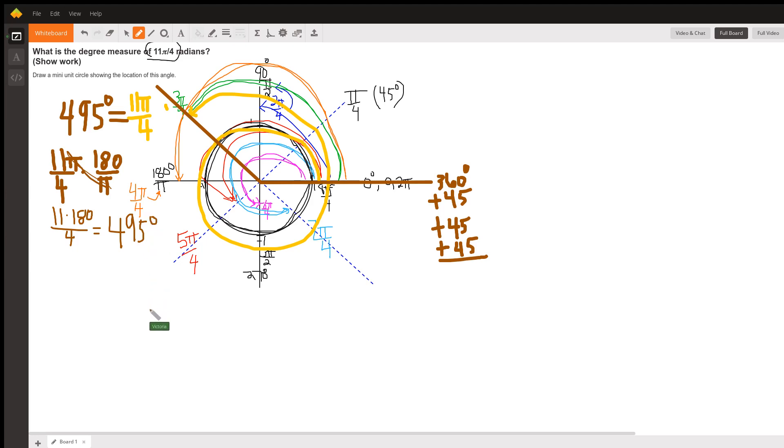So there are several different ways to work this. But it's helpful to split the circle up and then just count how many π/4's you've gone until you get to 11 of them.